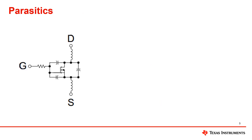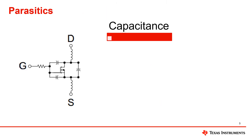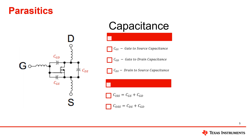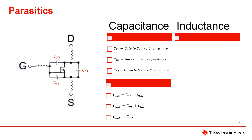Just like a MOSFET, GAN FETs also have parasitic capacitances between each terminal. The input capacitance CISS is the sum of the gate-to-source and gate-to-drain capacitances. The output capacitance COSS is the sum of the drain-to-source and gate-to-drain capacitances. The feedback capacitance, or the reverse transfer capacitance CRSS, is simply the gate-to-drain capacitance. Just as it has parasitic capacitances, it also has parasitic inductances at each terminal.